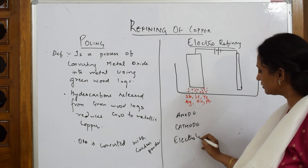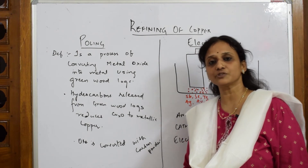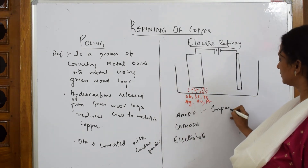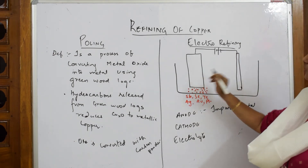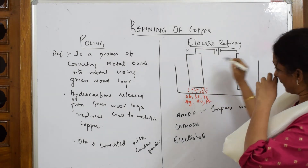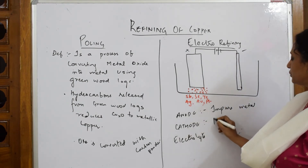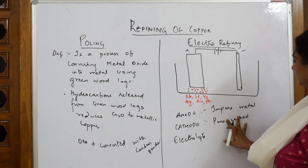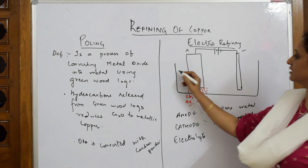As shown in the earlier video for zinc, the anode is always the impure metal — impure metal acts as anode (positive). The cathode is the pure metal — pure metal acts as cathode (negative).